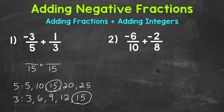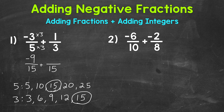Now we need to rename our fractions with that denominator of 15 as equivalent fractions. Starting with negative 3 fifths — 5 times 3 is 15, so negative 3 times 3 is negative 9, giving us negative 9 fifteenths. For 1 third — 3 times 5 is 15, and 1 times 5 is 5, so 5 fifteenths is our renamed equivalent fraction.